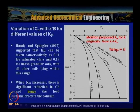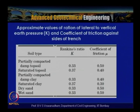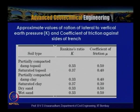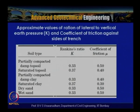Approximate values of the ratio of lateral to vertical earth pressure k and coefficient of friction against the sides of the trench are tabulated. For partially compacted damp clay: k = 0.33 (Rankine ratio), coefficient of friction = 0.4. Saturated clay: k = 0.37, friction = 0.3. Dry sand: k = 0.33, friction = 0.5. Wet sand: k = 0.33, friction = 0.5.